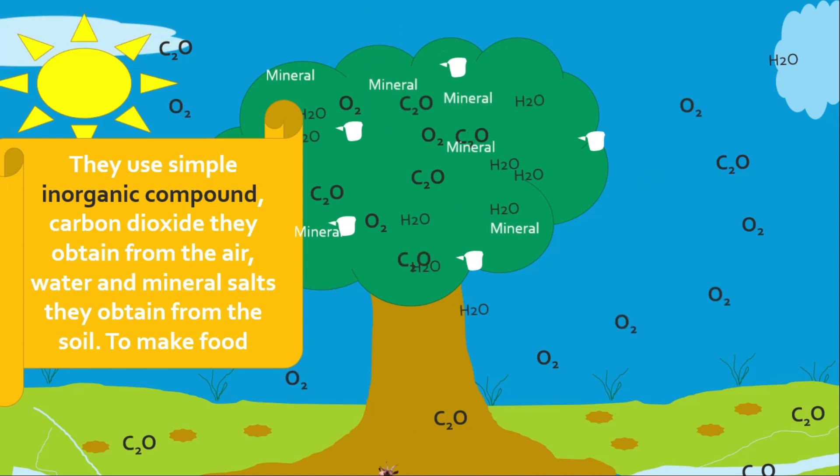The gaseous exchange of carbon dioxide and oxygen takes place in the leaf. The plant obtains carbon dioxide from the air. Carbon dioxide and oxygen move by the process of diffusion in and out of the leaf.